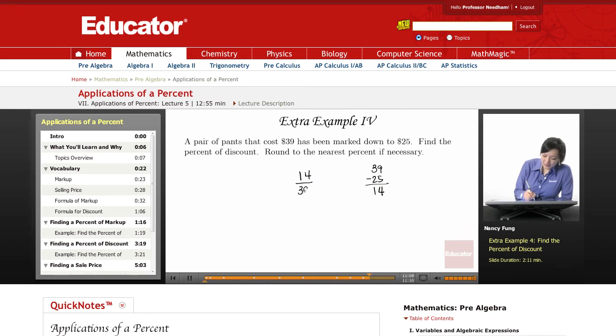14 over the original price of $39 equals P over $100. I can't simplify the left here, so I'm just going to go ahead and find my cross products.